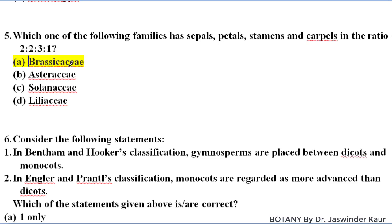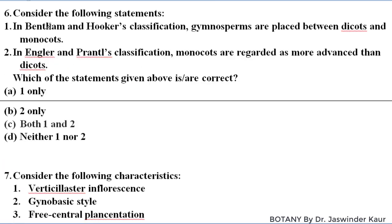Consider the following statements: in Bentham and Hooker's system of classification, gymnosperms are placed between dicots and monocots. In Engler and Prantl's classification, monocots are regarded as more advanced than dicots. Both statements are correct, so both statement one and two are the correct answer.